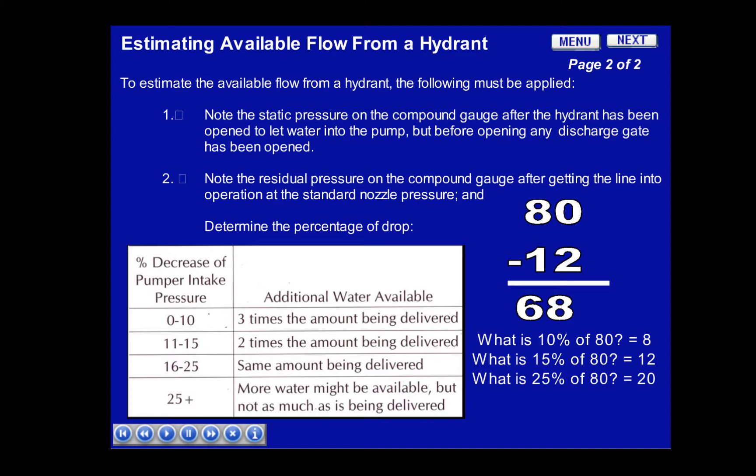The simple way to determine the percentage loss of your static pressure is to ask yourself: what is 10% of 80? In this case, that equals 8. Then simply take your answer and add half of 8, which is 4, and that'll tell us what 15% is. In the case of 80, 15% is 12. Then, to determine what the 25% loss is, you simply add 8 and 12 together, which equals 20. In the case of our sample of 80 psi, we had a loss of 15%, which was 12 psi. Based on the 15% loss, we would be able to supply two times the amount of water being delivered.